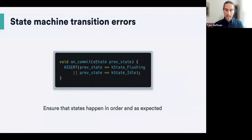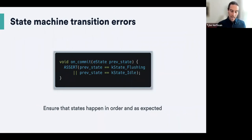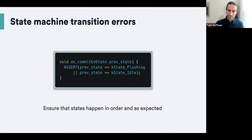Another common developer bug where you can use asserts is state machine errors. State machines always have a particular flow through the path — only a few states can lead to another couple of states. Detecting errors with asserts is the most useful way to do that. It's likely a developer bug, and if it's not, then it's a root bug and should be fixed anyway. The easiest way is to add asserts on every single state transition within every function.